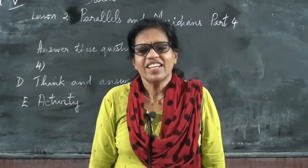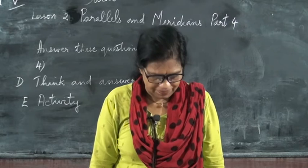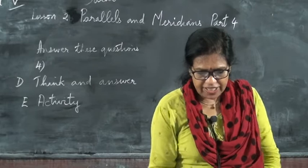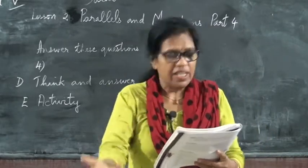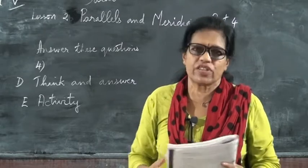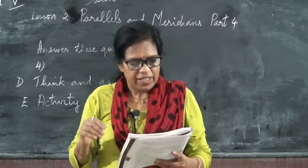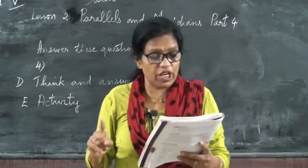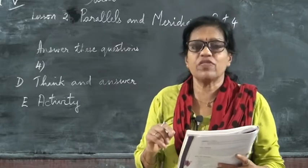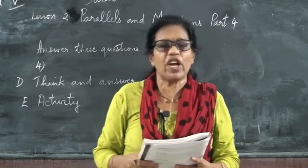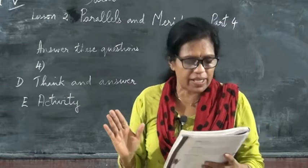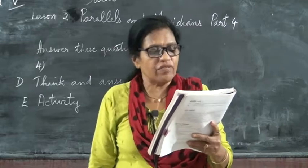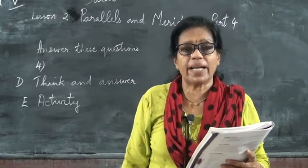Welcome, fifth standard children, to your social class. In the last class I explained and gave you three answers: What is a parallel? Write three features of a parallel. How do we number parallels on a globe? What is a meridian? Write three features of a meridian. I hope you all have copied and studied. Now the next question I have to give you is the fourth one — how can we locate a place on a globe.